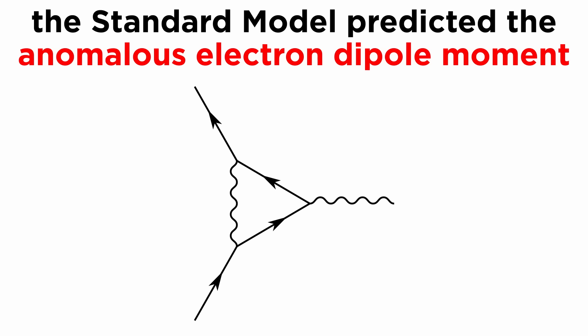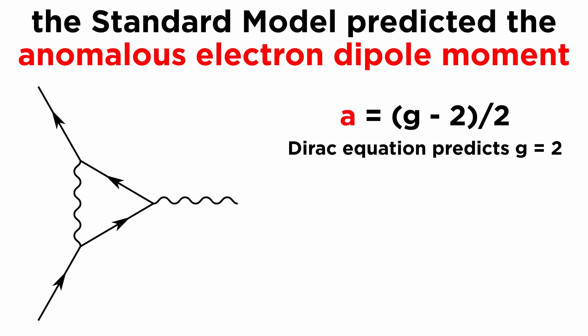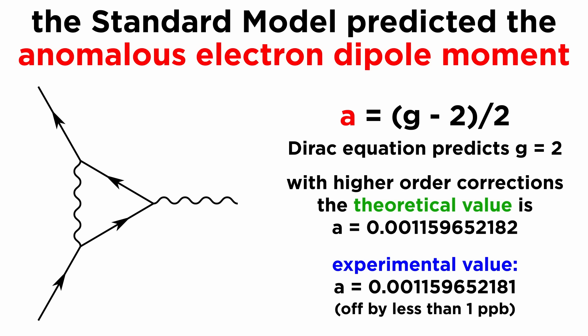On top of all these impressive predictions, perhaps the standard model's greatest accomplishment is its prediction of the value of the anomalous electron dipole moment. This is an intrinsic particle property describing charge distribution, and it deviates slightly from the originally expected value of 2. The standard model predicted this deviation to a precision of more than one part per billion, indicating that the electron is extremely well described by this model.